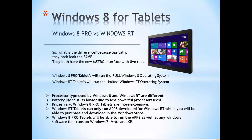Moving on to price: Windows 8 Pro tablets are more expensive because they use more powerful processors and run the full Windows 8 operating system. To give a rough idea, a Windows RT tablet may start at $500, while a Windows 8 Pro tablet probably starts around $900 and could go up to $2,000.